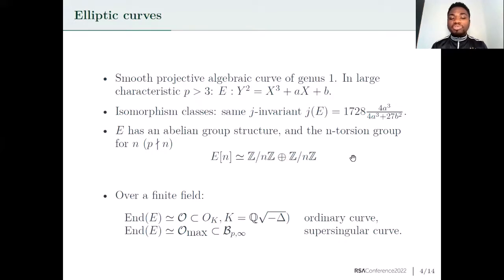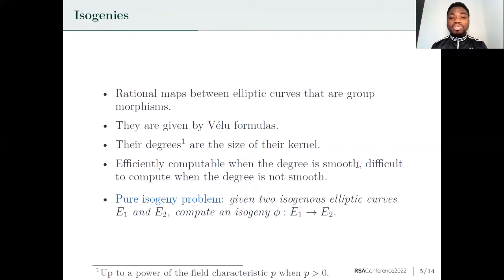Over finite fields, we have only two possibilities for the endomorphism ring of an elliptic curve. Either this endomorphism ring is an order in an imaginary quadratic field, in which case we say the curve is ordinary. Or this endomorphism ring is a maximal order in the quaternion algebra ramified at p and infinity, in which case we say the curve is supersingular. Isogenies are rational maps between elliptic curves that are also group morphisms. They are given by Vélu formulas, and their degree is, up to some precision, the size of their kernel. They can be efficiently computed when the degree is smooth, and we don't know efficient formulas to compute isogenies when they have large and non-smooth degree.